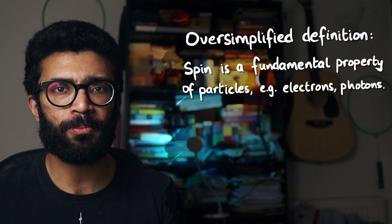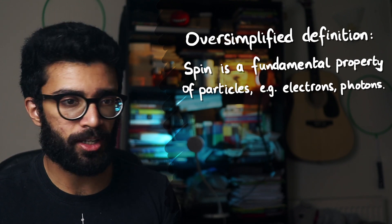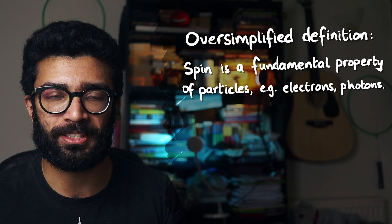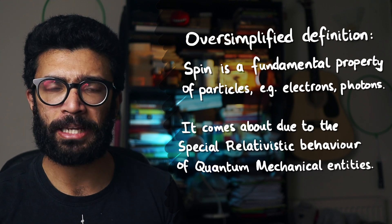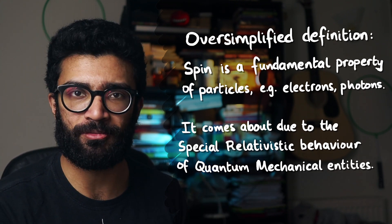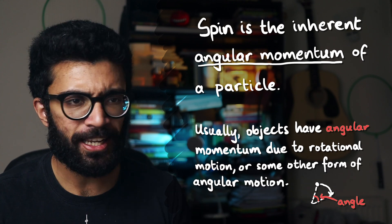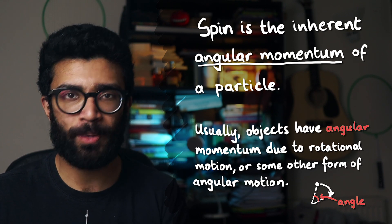Spin is an inherent property of some of these particles, electrons, photons have spin. It's kind of like mass and charge, and other fundamental properties that you may or may not be able to think of. Spin is something that comes about when we think about quantum mechanics in conjunction with special relativity, Einstein's special relativity.